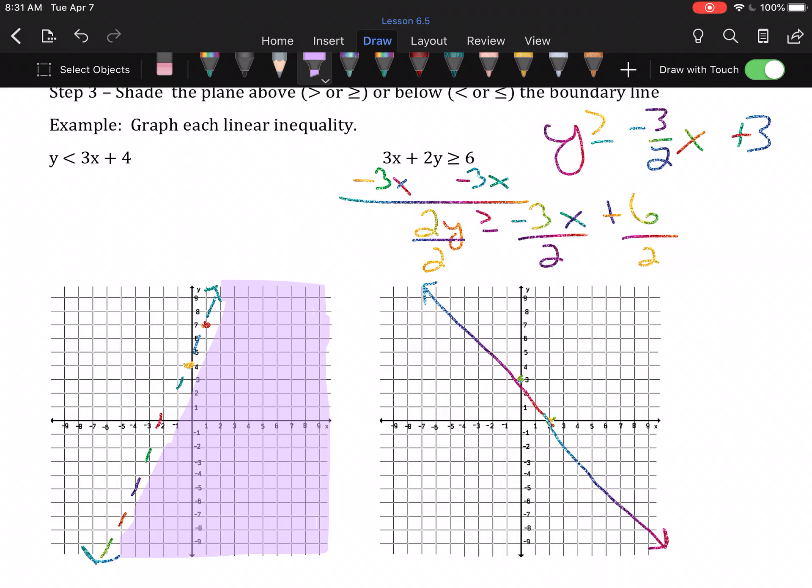And step 4, shade. This is a greater than inequality, so we're going to shade above that line.